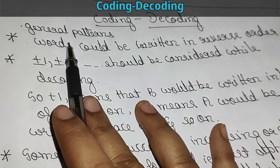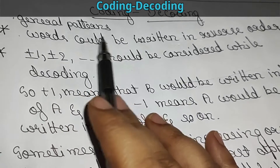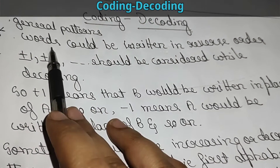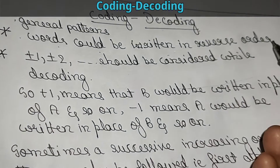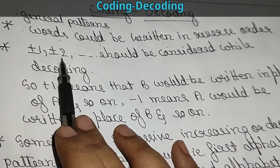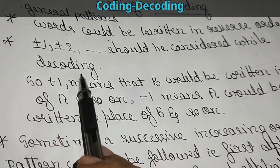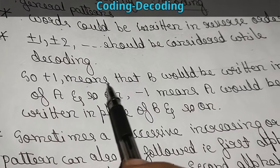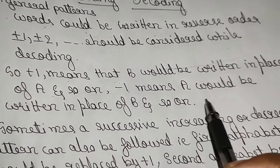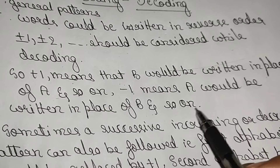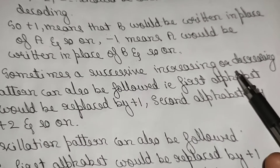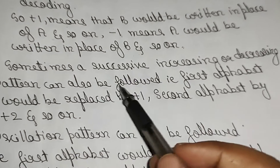The question pattern may be like this: words could be written in reverse order. Or the pattern may use plus or minus 2 while decoding. Plus 1 means B would be written in place of A, and minus 1 means A would be written in place of B, and so on.